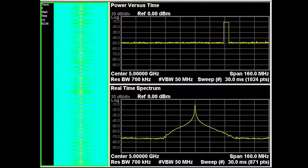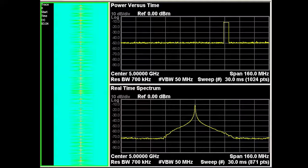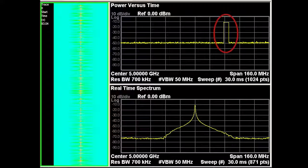The power versus time trace, similar to a zero span measurement, allows you to see antenna patterns as they scan past our analyzer. It can also detect pulses with widths down to 5 nanoseconds.